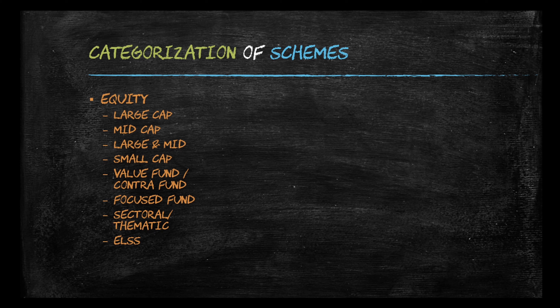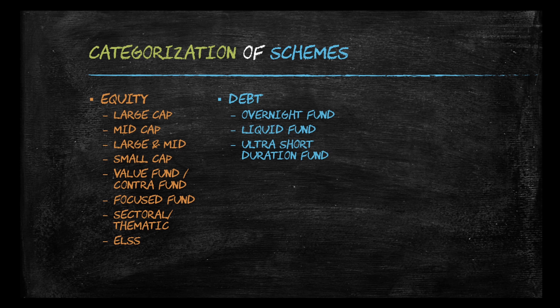Besides this, a fund may also choose to have sectoral or thematic investments — for example, investing in financial institutions, technology companies, or pharma companies. These are called equity mutual funds. When we talk about debt funds, these are funds where most investments are made in debt instruments such as certificates of deposit, debentures, treasury bills, and so on.